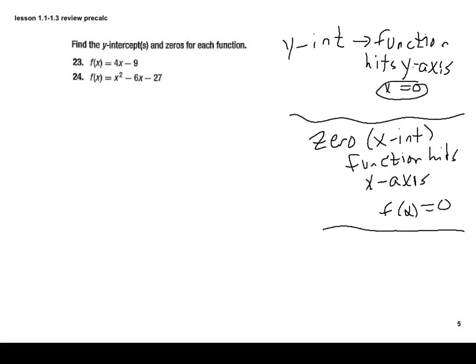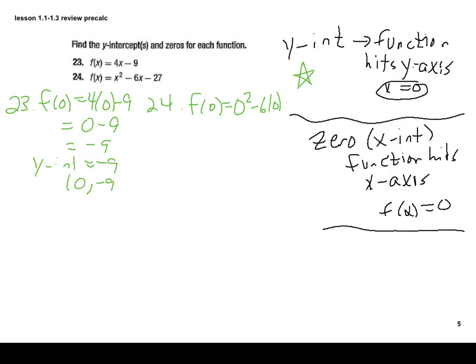So let's first find the y-intercept for both. Now the y-intercept is a little easier than our x-intercept or zero. We're just going to take out the x and plug in zero for that particular value. So our function in 23 has a y-intercept of negative nine, or you could even say the point (0, -9). And if we look at 24, if we plug zero into that, we get negative 27, or the point (0, -27). So those are the y-intercepts.